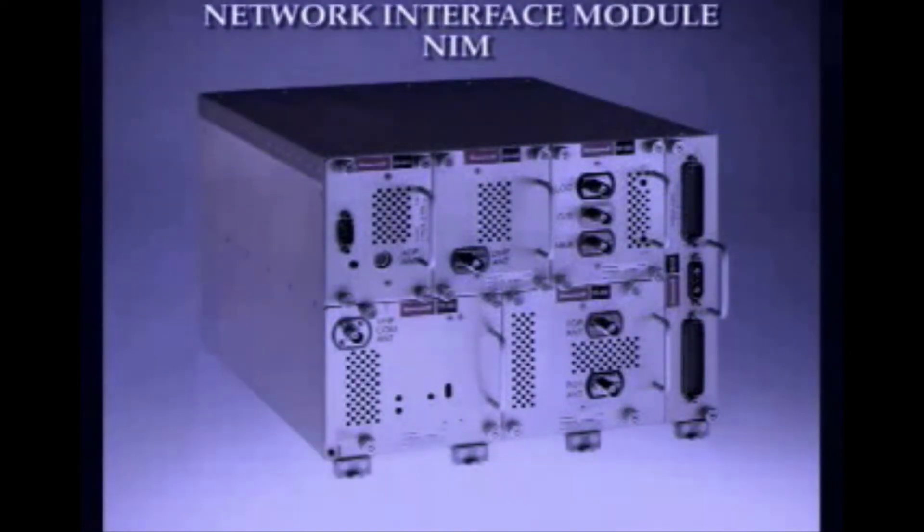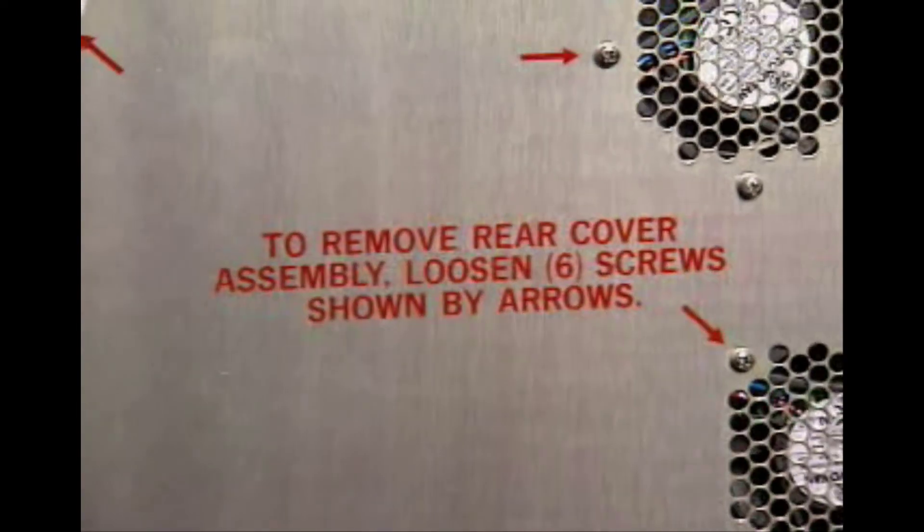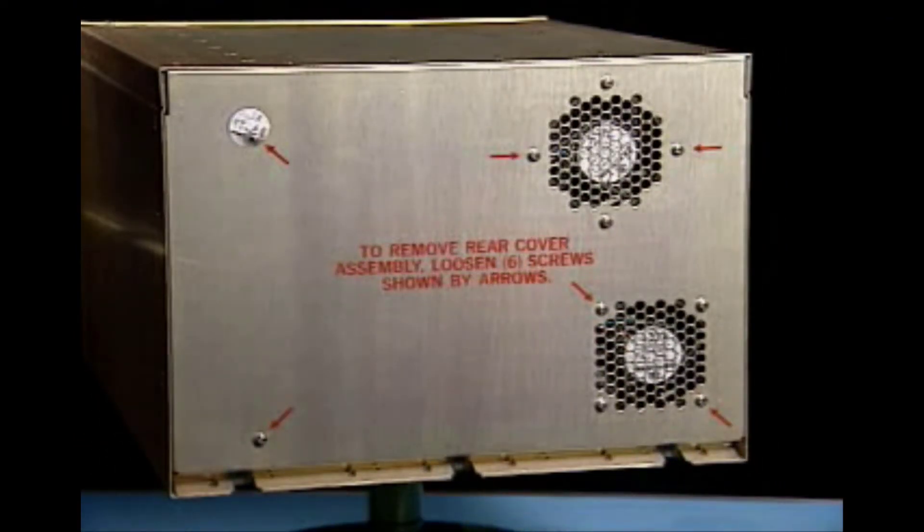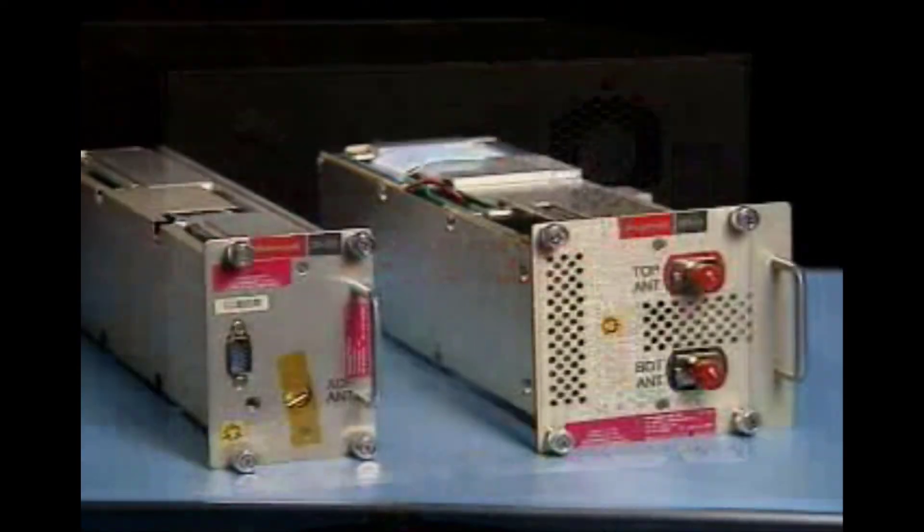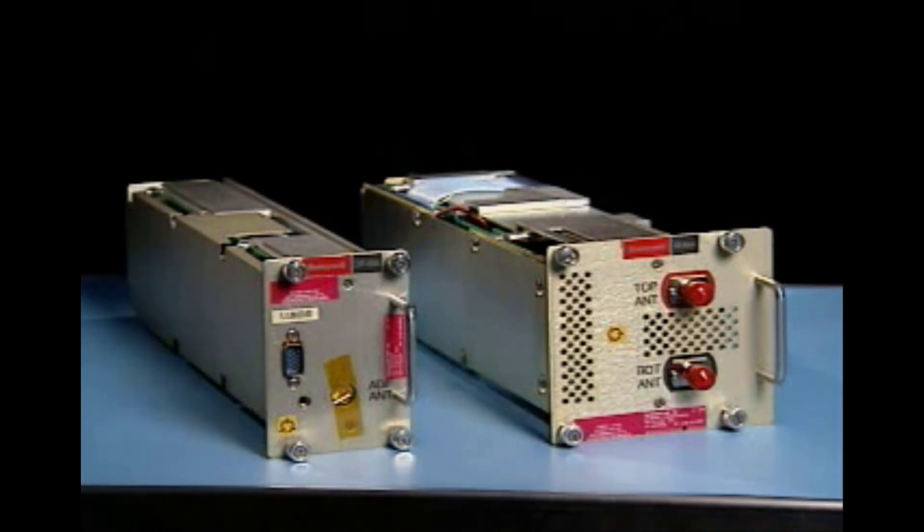Unlike MAU modules, MRC modules feature their own dedicated internal power supply. The MRC also contains internal cooling fans. The air intake is from the front, with the exception of the Network Interface Module, which intakes from the bottom, and the exhaust is out the rear. Sensors within each module activate the fans when internal temperatures exceed their preset limits.